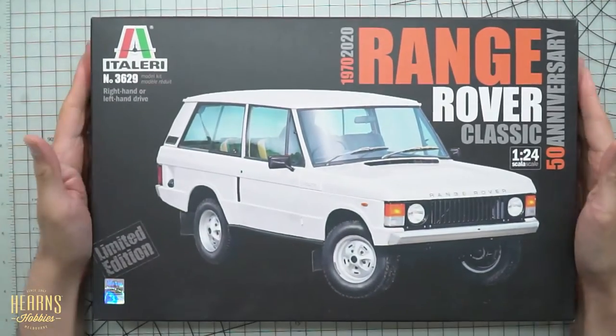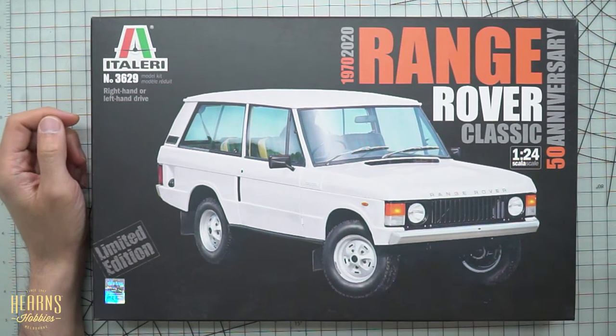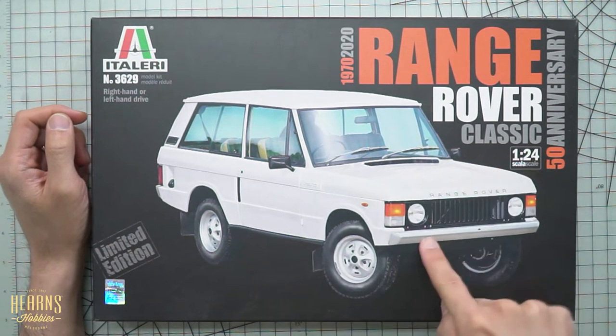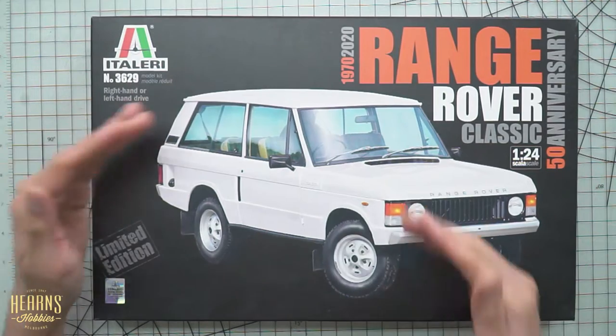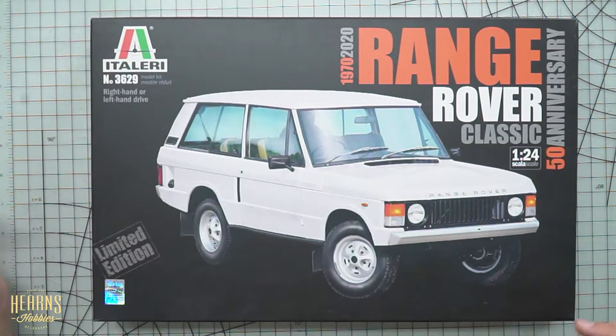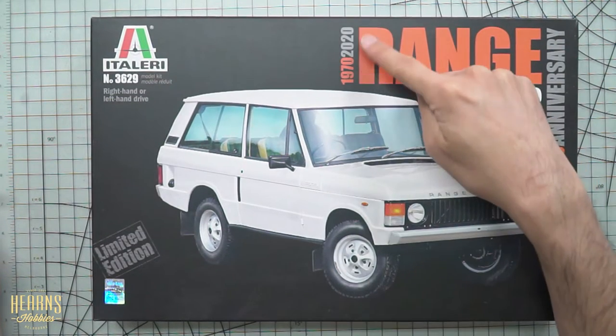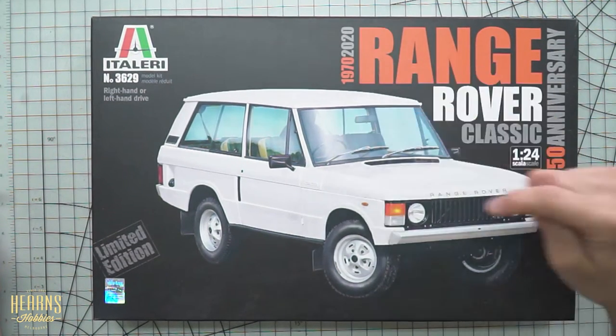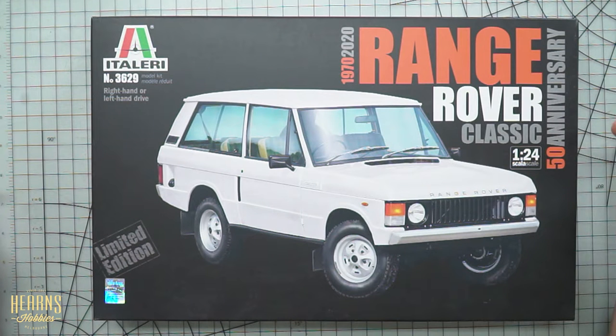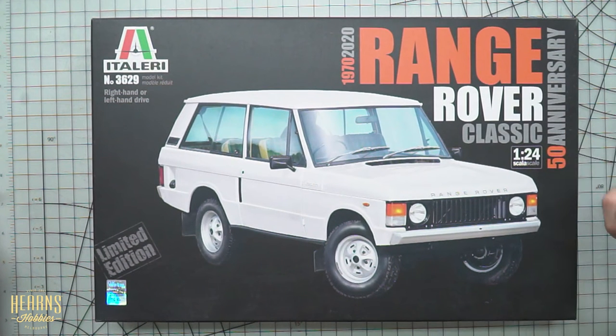Let's have a look at the box. Got the box art here, very nice. Shows all the classical shapes, very recognizable grille, overall shape of the cabin. You've got the years 1970 to 2020, so this is the 50th anniversary version.